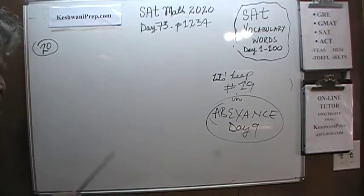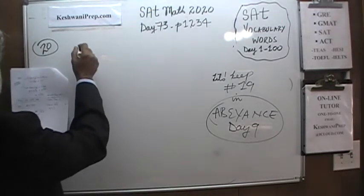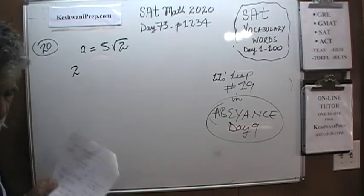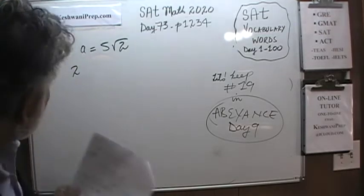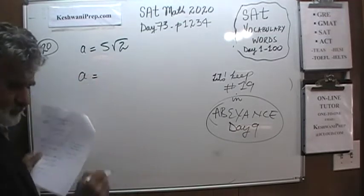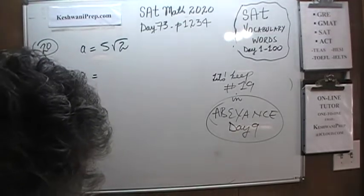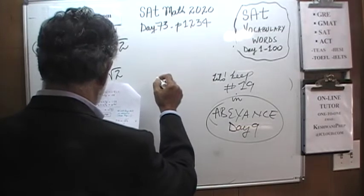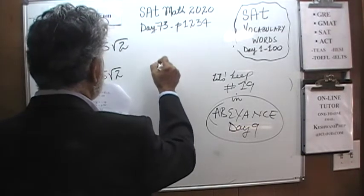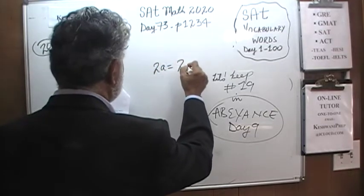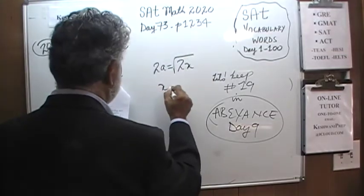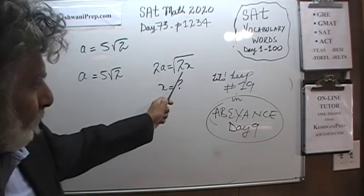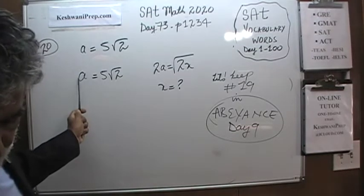Let's keep number 19 in abeyance and work on number 20. In number 20 we are told that a is equal to 5 times root 2. And we are told that 2a is equal to the square root of 2x. The question is: how much is x? So we have two equations: one tells us that 2a equals the square root of 2x, and the other tells us that a equals 5 times root 2.